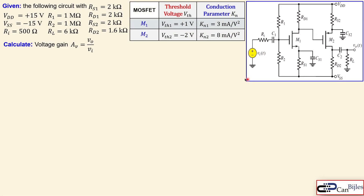Let's look at our circuit. We have two transistors, M1 and M2. The parameters of these two transistors are shown here. M1 is the N-channel enhancement MOSFET and M2 is the P-channel enhancement MOSFET. You can see the threshold voltages and conduction parameters for each. We have VDD and VSS as the DC voltage sources, RI as the output impedance of the source, and the resistors including the load of six kilo ohms. What we want is the calculation of the voltage gain, which is VO over VI.